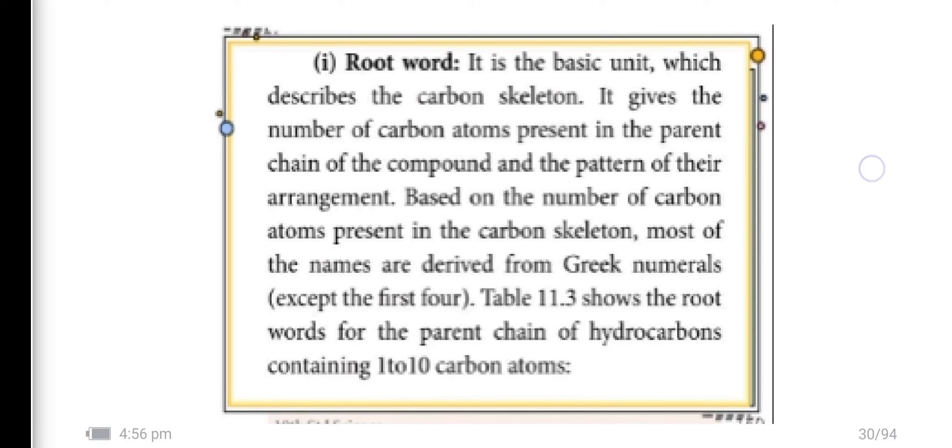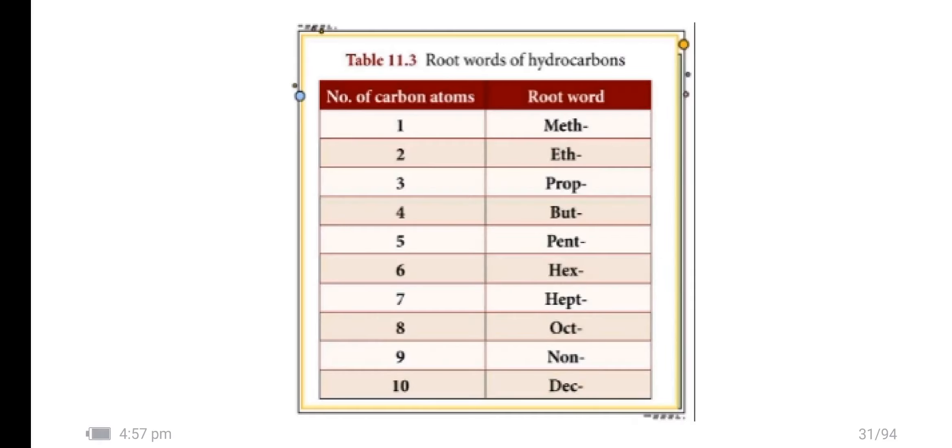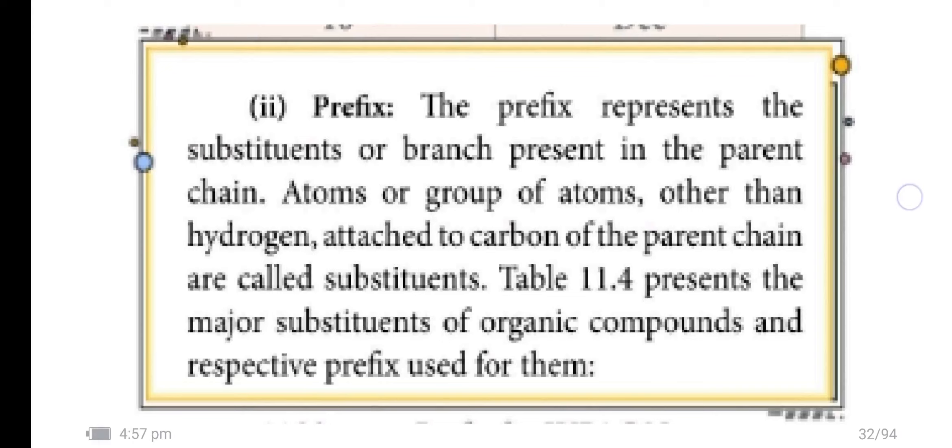1 carbon is meth, 2 is eth, 3 is prop, depending upon the carbon. The prefix represents the substitutions or branch present in the parent chain. Atoms or group of atoms other than the hydrogen attached to carbon of parent chain are called substitutions.